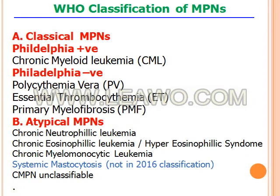Now, WHO classification of myeloproliferative neoplasms: the WHO classifies them into classical and atypical myeloproliferative neoplasms. Classical myeloproliferative neoplasms are subdivided into Philadelphia-positive, including chronic myeloid leukemia, and Philadelphia-negative primary myeloproliferative neoplasms.